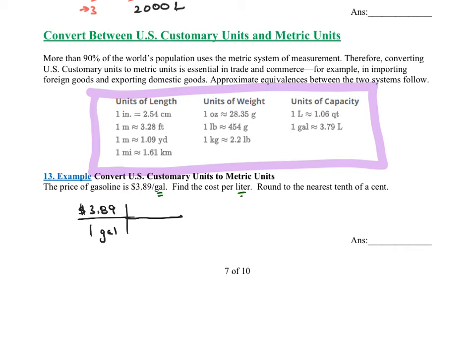So how do we do that? We'll just look at this. From gallons to liters is given to us. It's an approximation, but we're going to use that approximation. We know that one gallon is approximately 3.79 liters.